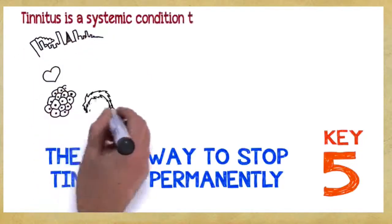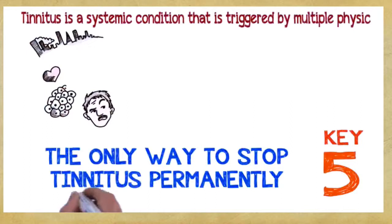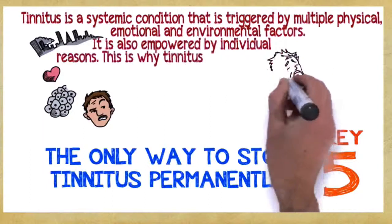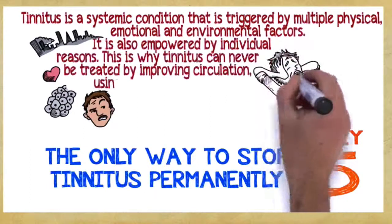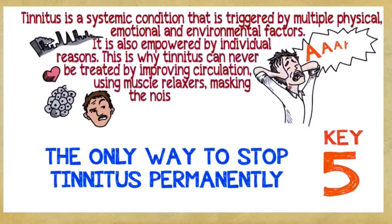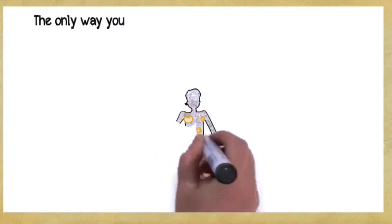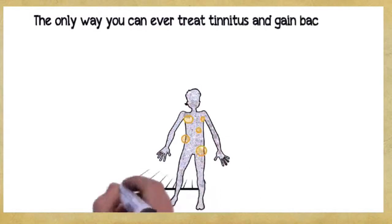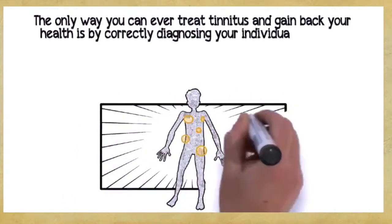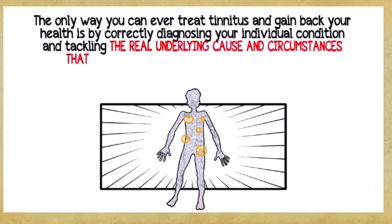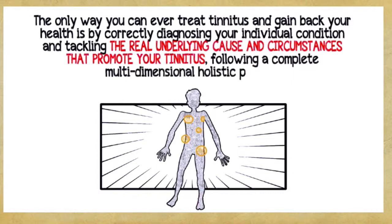Key number five: The only way to stop tinnitus permanently. Tinnitus is a systemic condition that is triggered by multiple physical, emotional, and environmental factors. It's also empowered by individual reasons. This is why tinnitus can never be treated by improving circulation, using muscle relaxers, masking the noise, or cutting a nerve in your auditory system. The only way you can ever treat tinnitus and gain back your health is by correctly diagnosing your individual condition and tackling the real underlying cause and circumstances that promotes your tinnitus, following a complete, multi-dimensional, holistic program.